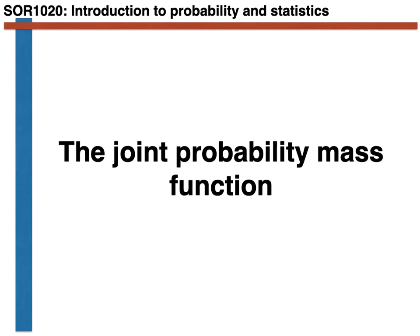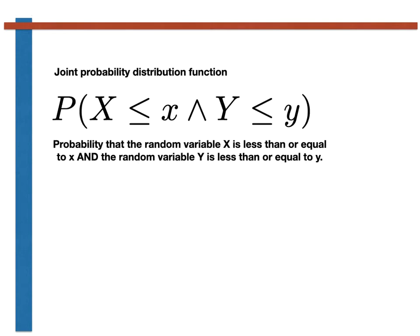If we have two random variables X and Y, it therefore stands to reason that we can introduce the concept of a joint cumulative probability distribution function. This function would tell us the probability that X is less than or equal to small x and that Y is less than or equal to small y.